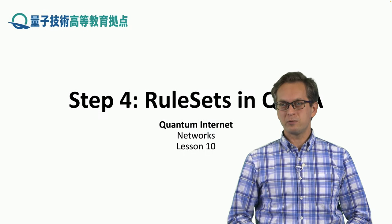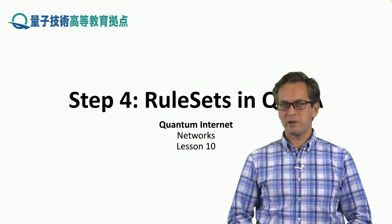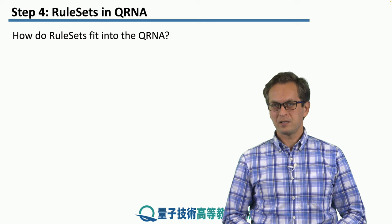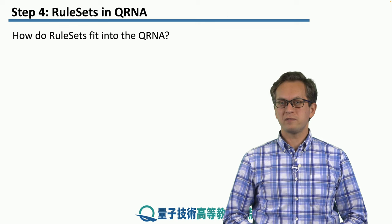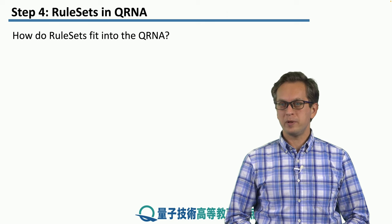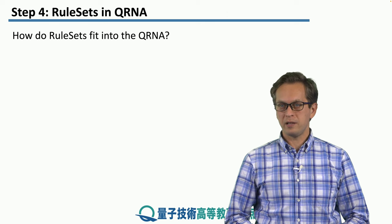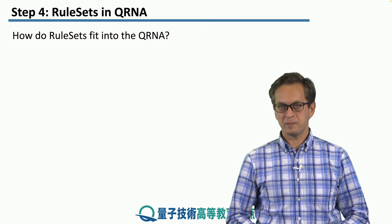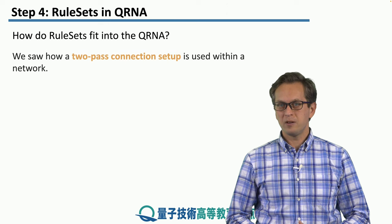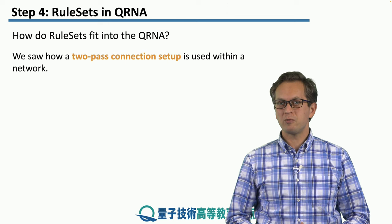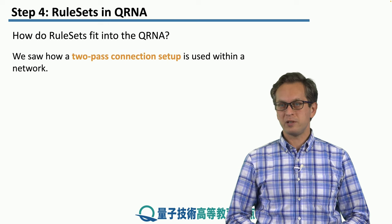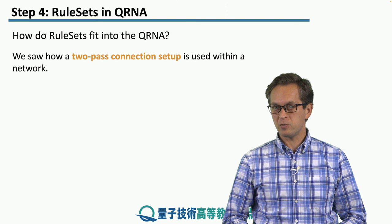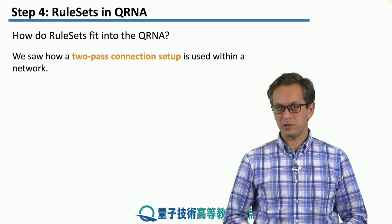Step 4: Rulesets in qRNA. So how do rulesets fit into the picture of qRNA that we have painted in the previous step? We have seen how rulesets are generated in the two-pass connection setup, when this is used within a network.